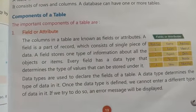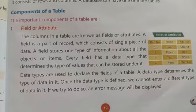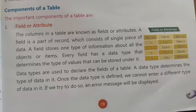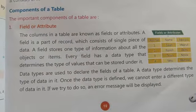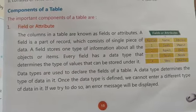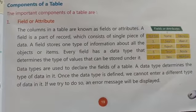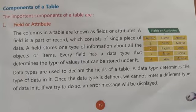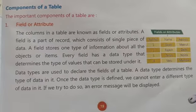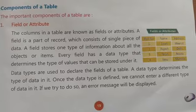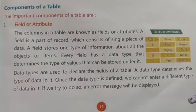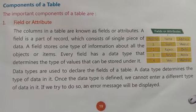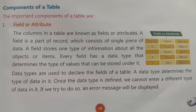The columns in a table are known as fields or attributes. A field is a part of a record. The record consists of a single piece of data. The field stores one type of information about all the objects and items.